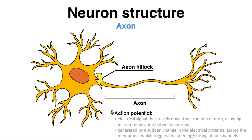An action potential is a brief electrical signal that travels down the axon of a neuron, allowing for communication within the body. It is generated by a sudden change in the electrical potential across the neuronal membrane, which triggers the opening and closing of ion channels, leading to an electrical cascade that opens and closes even more ion channels along the axon.